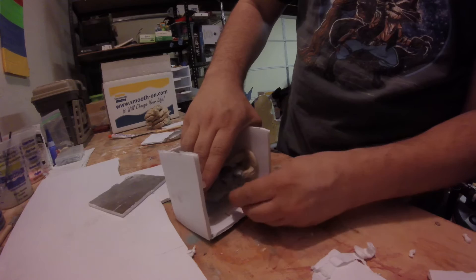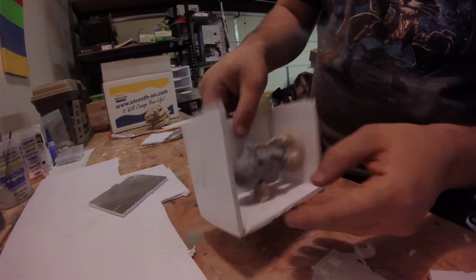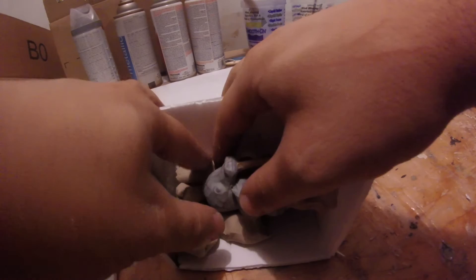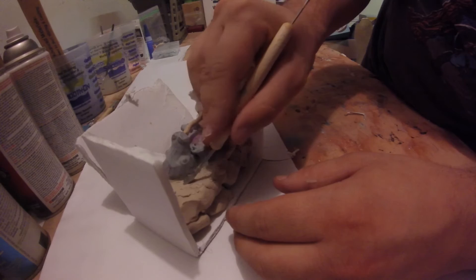Next, I need to put clay under one half of the model in order to support it and let us pour the first half of the silicone into the top. Layer by layer, I pack it in, and I make sure it has a really nice clean edge against the character.